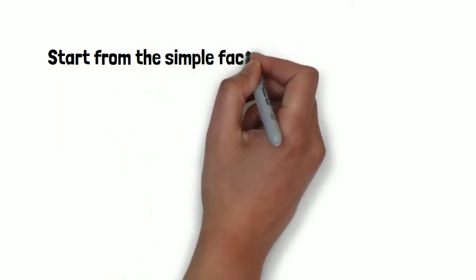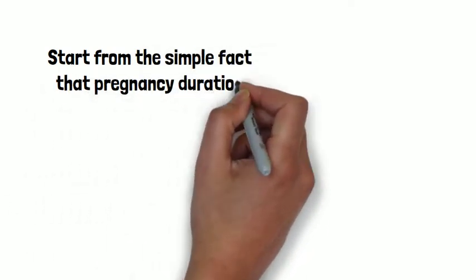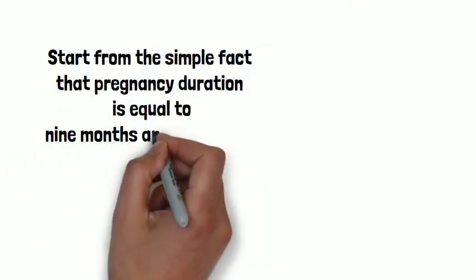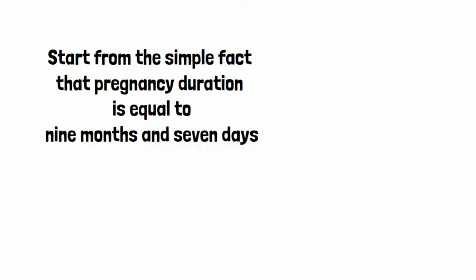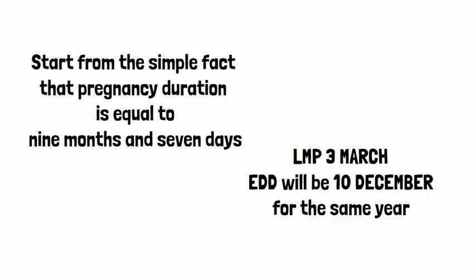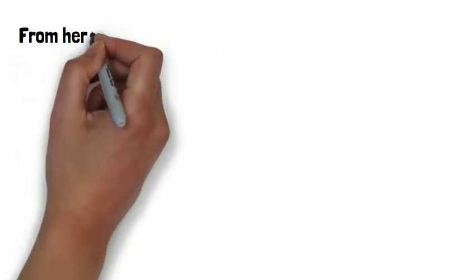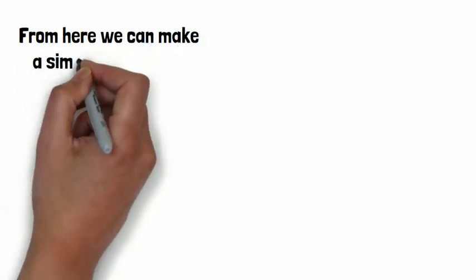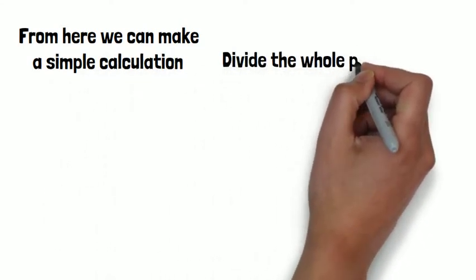Before we start our lesson let's go over some basic concepts. An average pregnancy is equal to a duration of nine months and seven days. Therefore if the last menstrual flow is on the 3rd of March, the expected date of delivery will be on the 10th of December for the same year. As the pregnancy is nine months and seven days, we can divide the pregnancy into three parts.